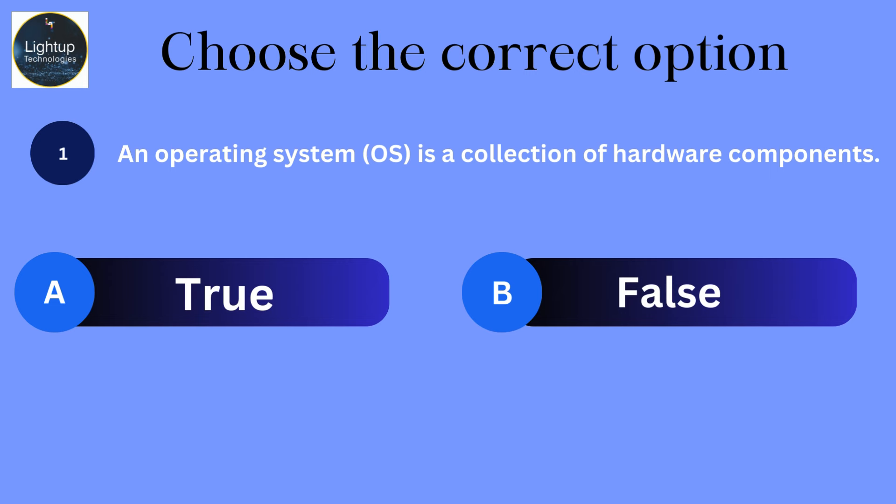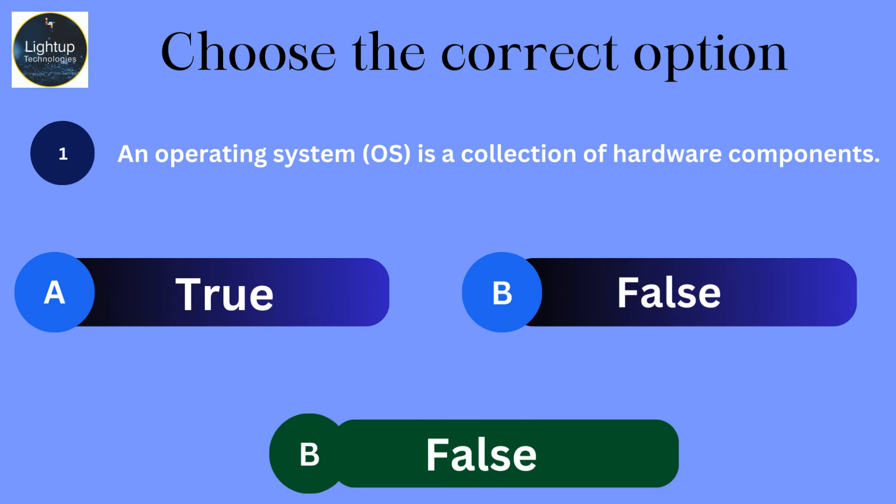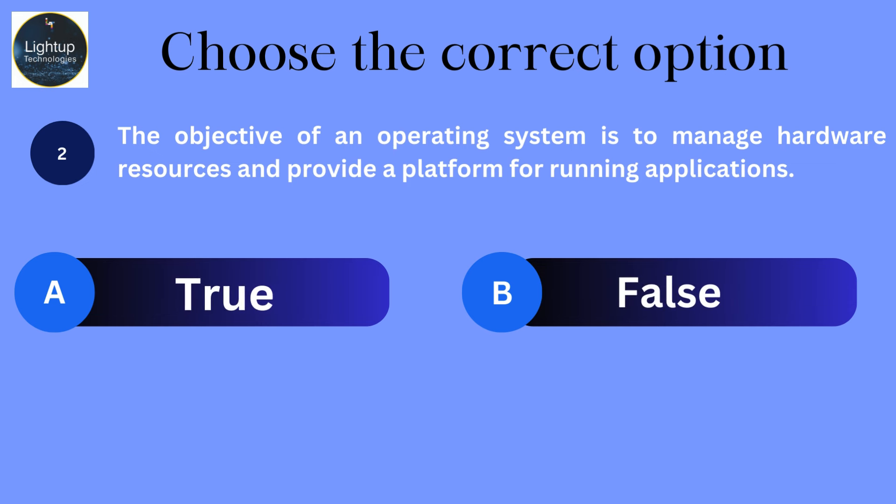An operating system is a collection of hardware components. The objective of an operating system is to manage hardware resources and provide a platform for running applications.